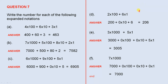Next: 2 times 100, plus 6 times 1. 2 times 100 is 200. We have a 0 in the tens column, and 6 times 1 is 6. So it's 206 — see the 0 in the tens column. Next: 3 times 1000, plus 5 times 1. 3 times 1000 is 3000. We have a 0 in the hundreds column, a 0 in the tens column, and 5 ones are 5. So it's 3005.